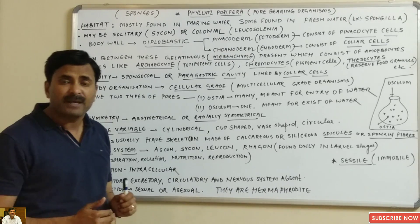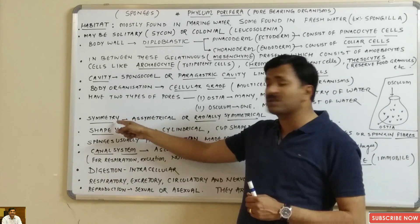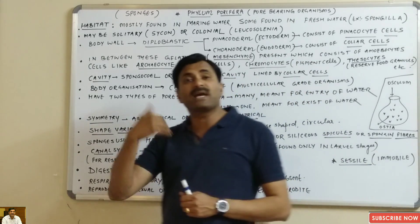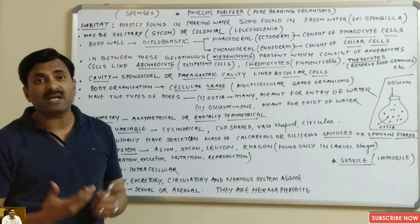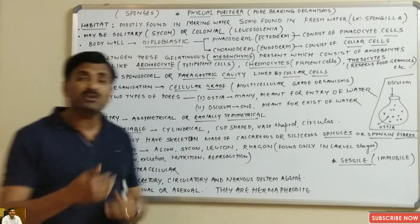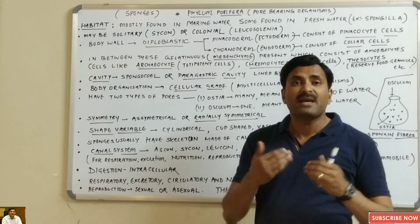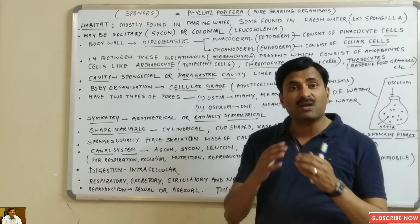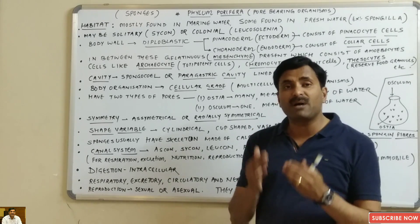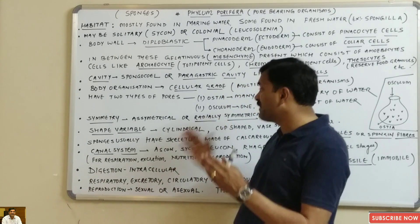Regarding symmetry, some sponges are radially symmetrical while some sponges are asymmetrical — not having any specific type of symmetry. If we talk about shape, they have variable shapes. Different sponges have different shapes: some are vase-shaped, some are urn-shaped, some are circular, some are cup-shaped, and some are cylindrical.